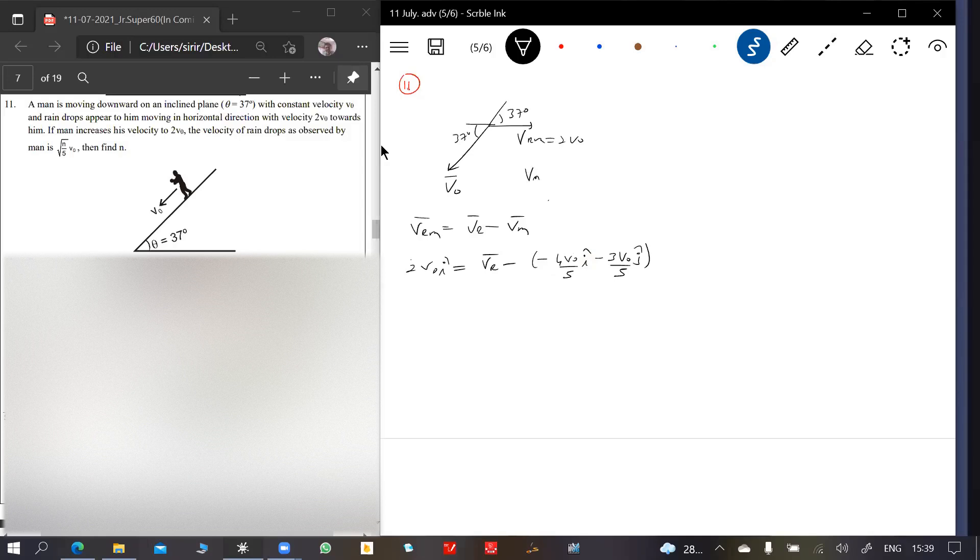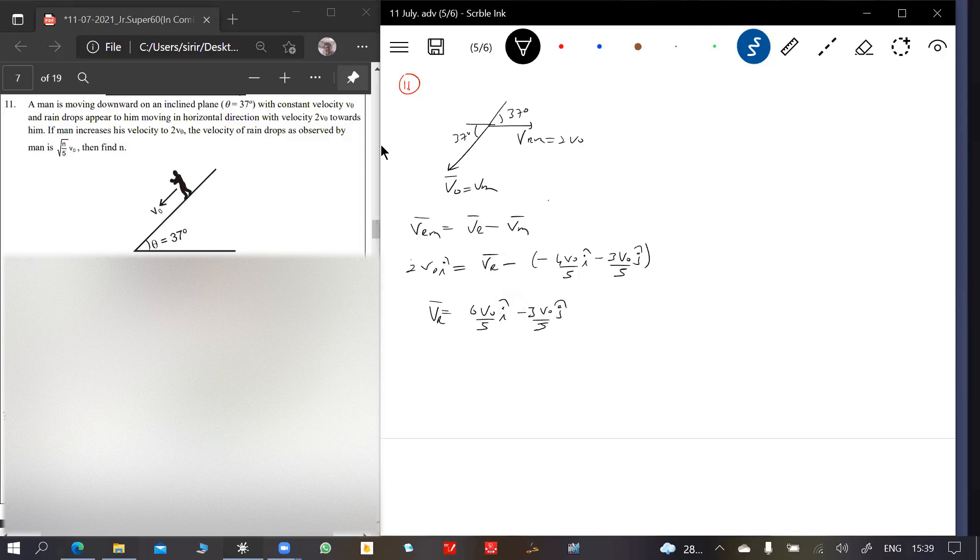V m is v m i. I can write it this way, very simple. Sending this to the other side, it will be 6 v naught by 5 i cap minus 3 v naught by 5 j cap. This is the actual velocity of rain.